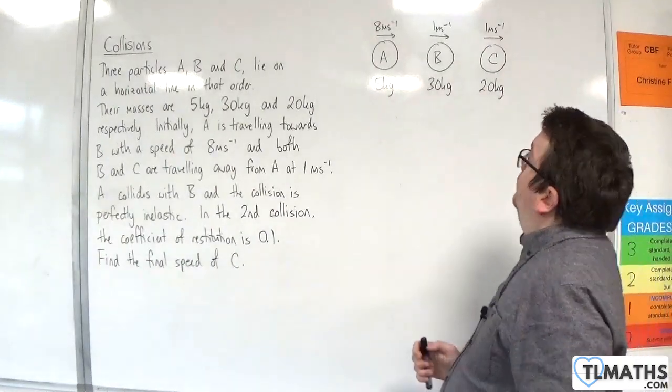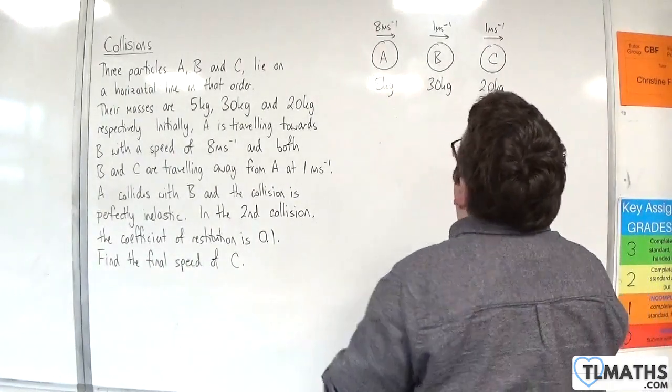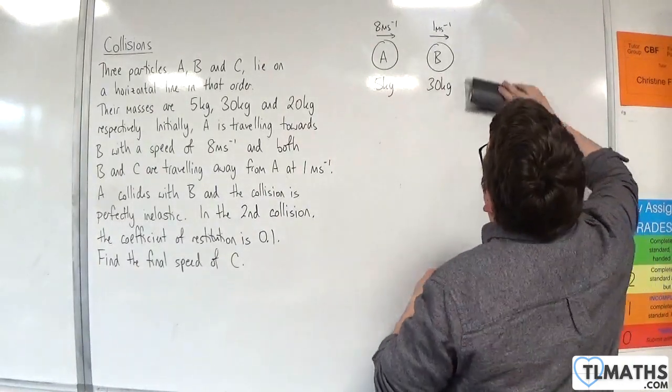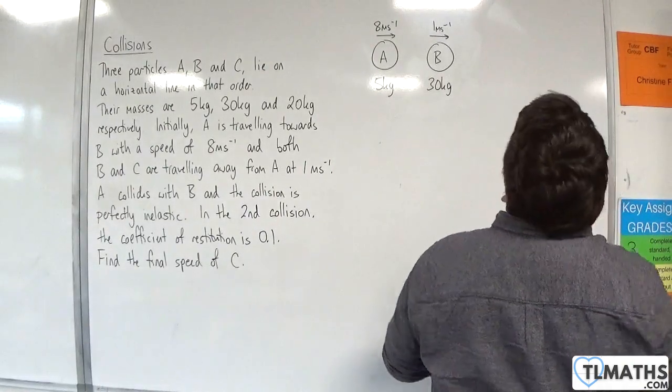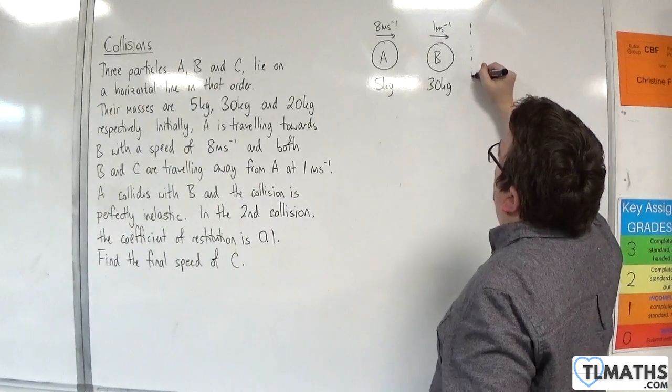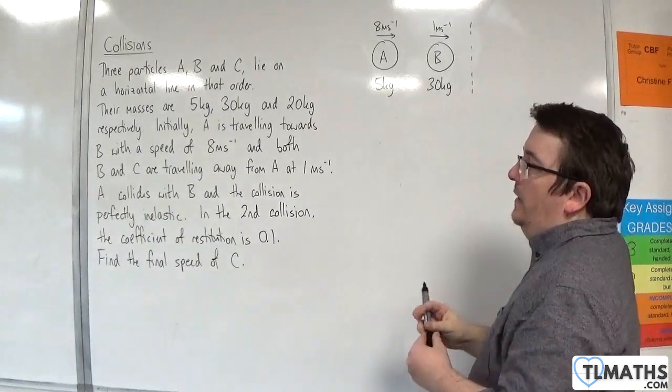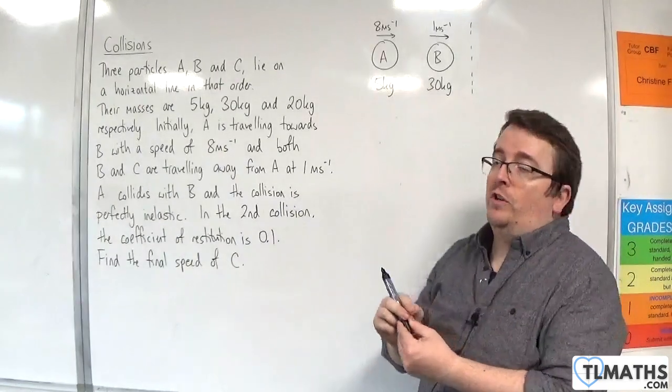Let's focus our attention on the first collision, which will be between A and B. We're told that the collision will be perfectly inelastic, and that means that the coefficient of restitution is 0.